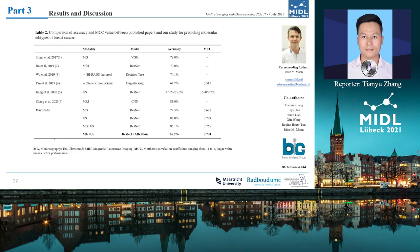Table 2 compares the previous research and AUC results. The results show that the deep learning image-based method performs better than methods based on genetic biomarkers and various features. Multi-modal imaging shows better performance than single modality imaging, and the attention mechanism is shown to further improve the performance of our model.